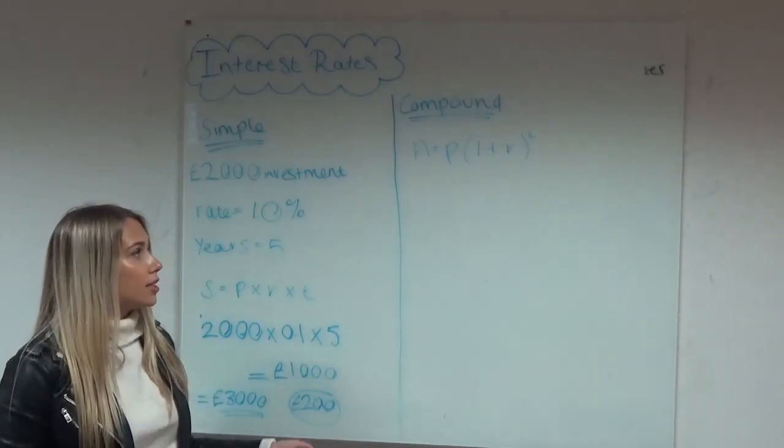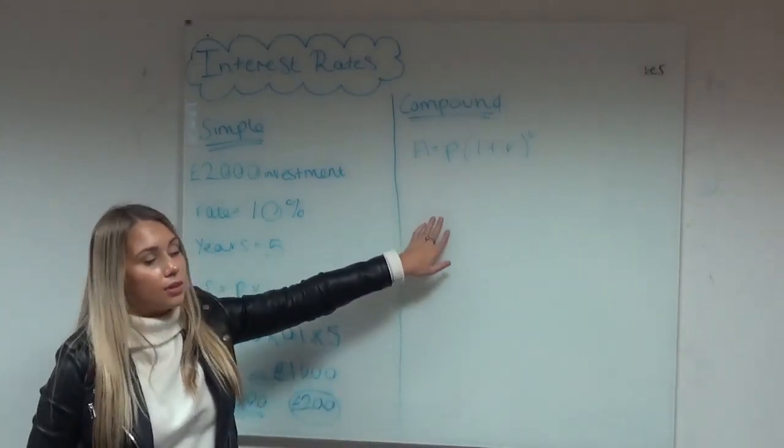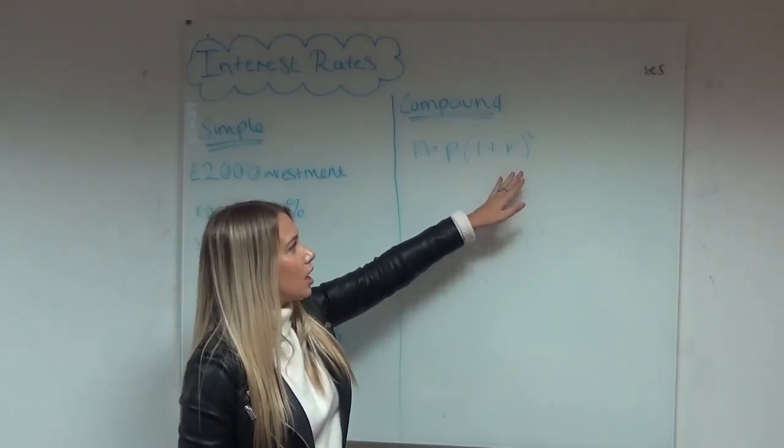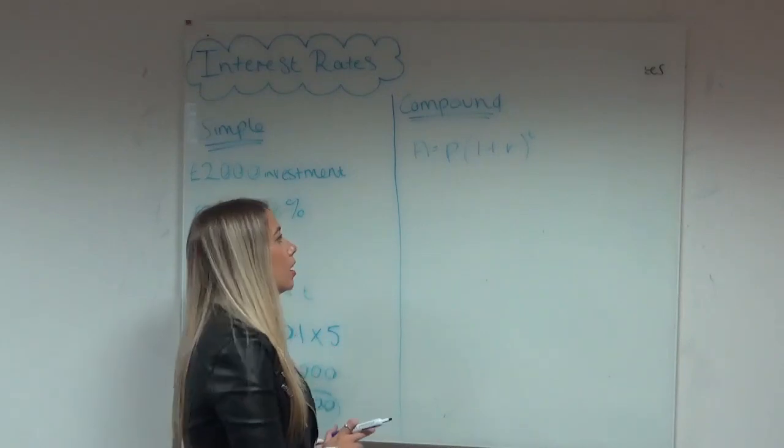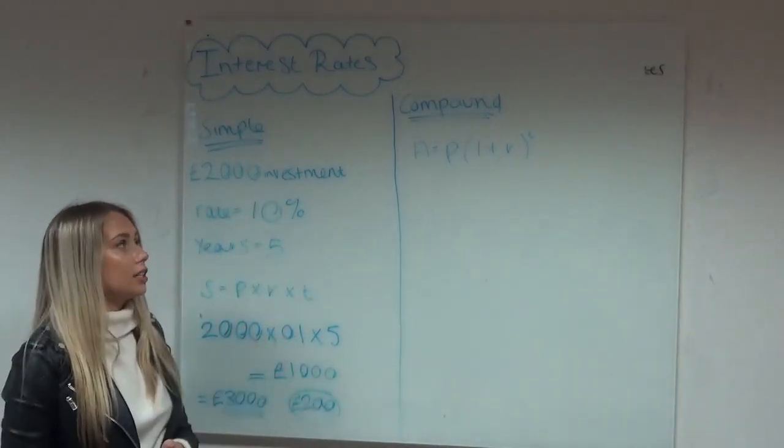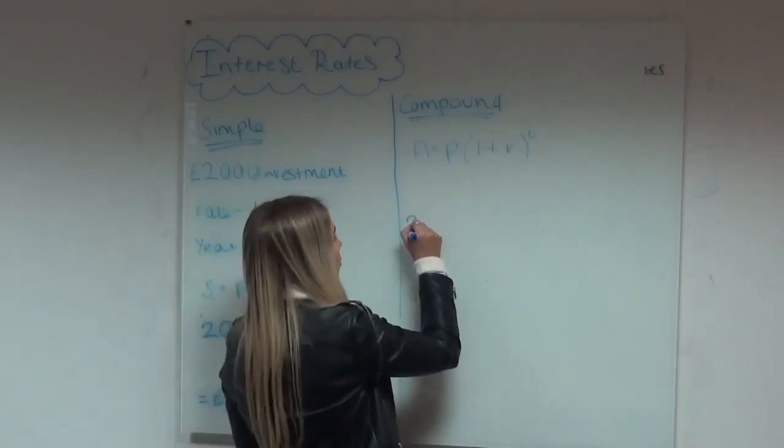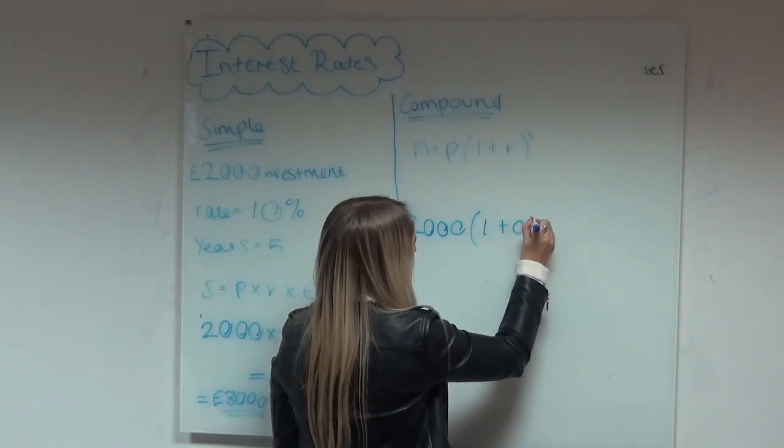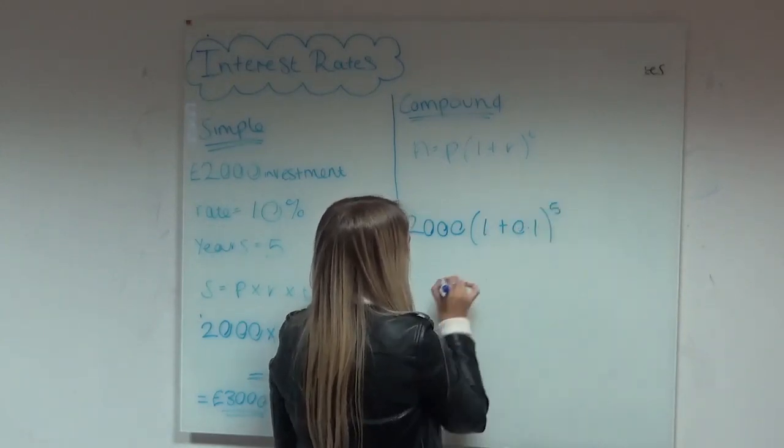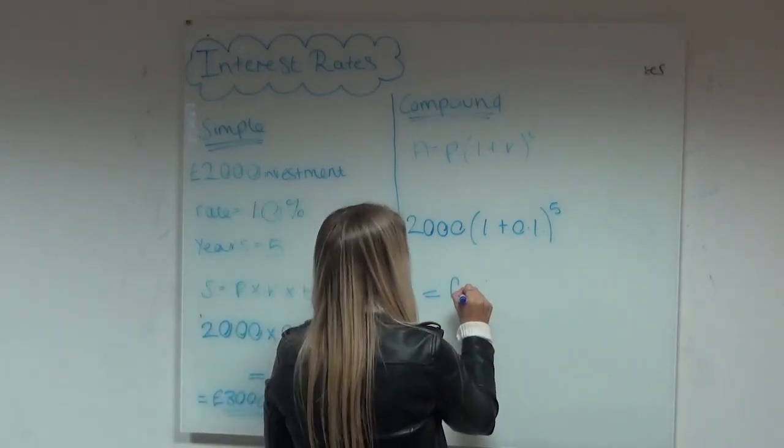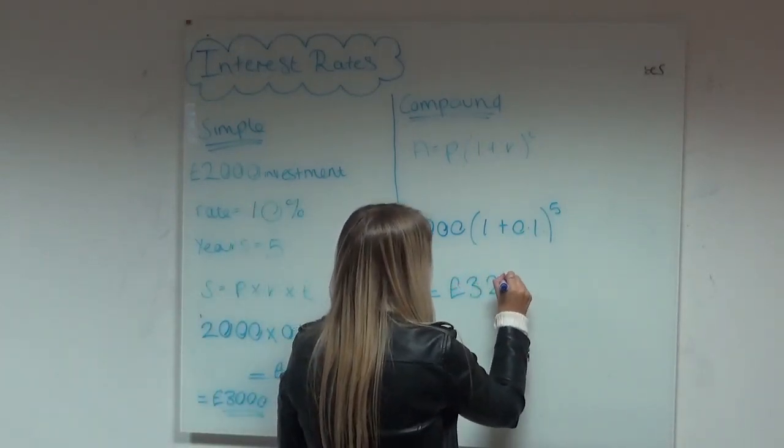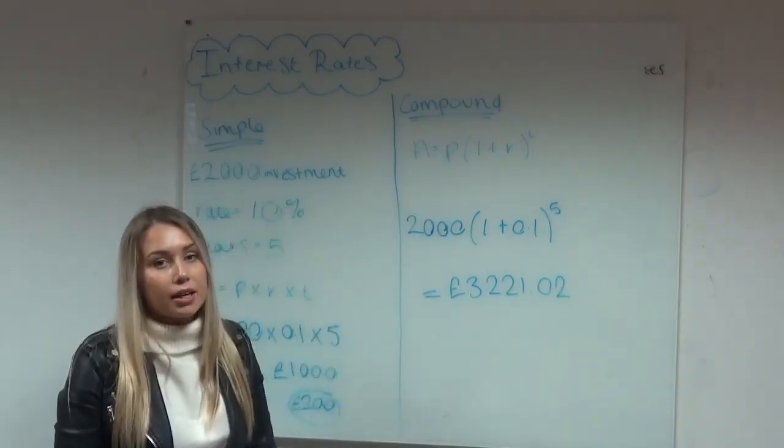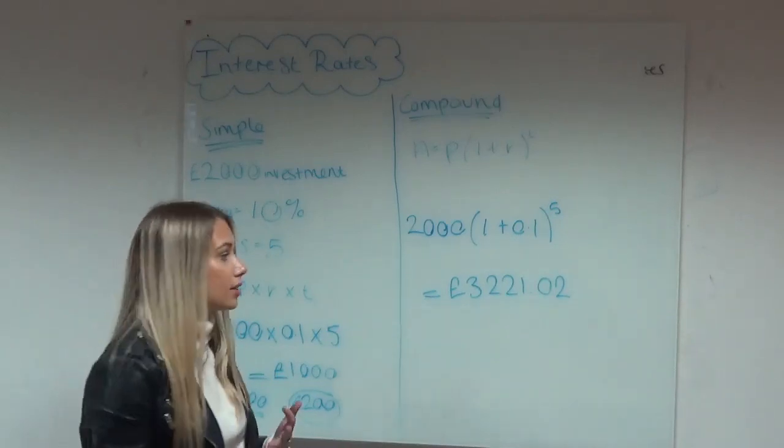So if we put this into practice, we've got the equation here, which is the principal value times 1 plus the rate of return to the power of time. So if we use this example again and plug it into the compound interest formula to see how these differ, we've got £2,000, which is the principal value, 1 plus 0.1 to the power of T, which is 5. Plug this into your calculator, you should get £3,221.02, which is the amount that you'll have in the bank account after the five years is up.